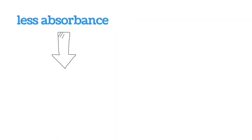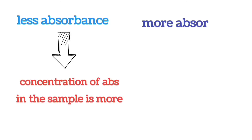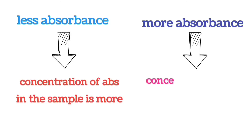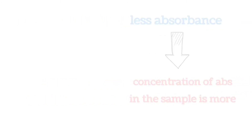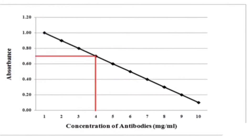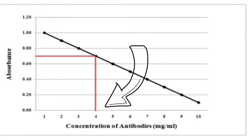In short, if the absorbance of the product is less, the concentration of antibodies in the sample is more; and if the absorbance is more, the concentration of antibodies in the sample is less. The actual concentration can be determined by extrapolating the absorbance value on a standard curve. In this way, competitive ELISA is used to determine antibody concentration, and an exactly reverse method is used to determine the concentration of antigen.